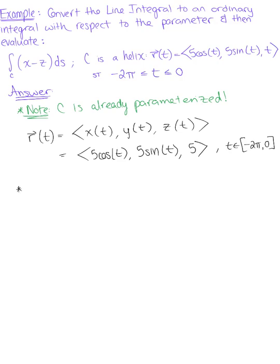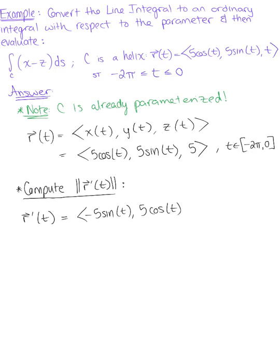So since we already have that parameterization, we can go right ahead and compute the magnitude. So we want to find the magnitude of our tangent vector. So our tangent vector here is going to leave us with minus five sine of t, five cosine of t. And shame on me, this is not a five, that should be a t, like it is in the given parameterization. So the derivative of t is one.